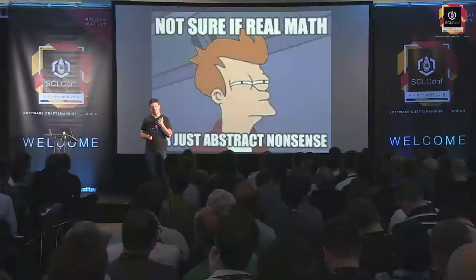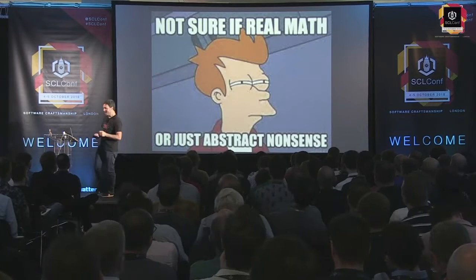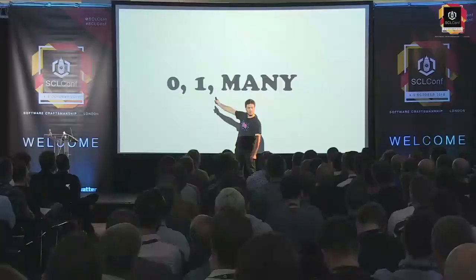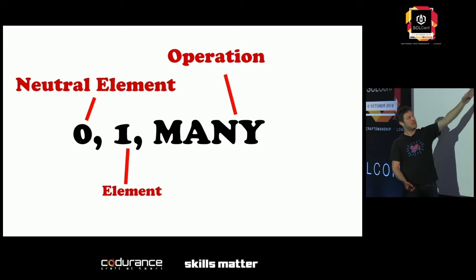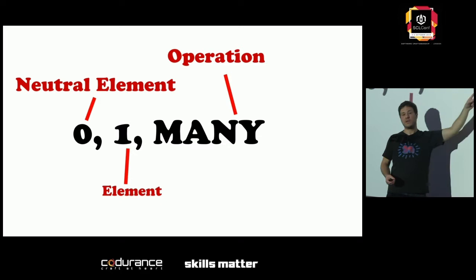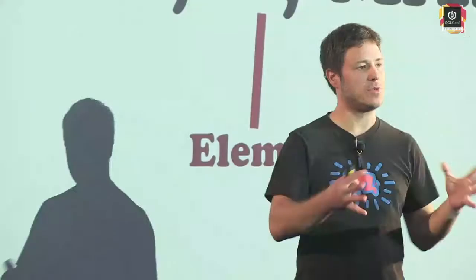At this point you may be thinking: what's this abstract nonsense? When I explained that to my wife, she understood everything and then said, 'so what? What for?' There's a joke in programming — I first heard it from Sandro — that there are only three numbers in programming: zero, one, and many. I believe monoids encapsulate all three special cases that you would have to handle one by one back into one single structure. The neutral element deals with absence, the regular elements deal with the singular, and the operation closed under the set deals with the plural.